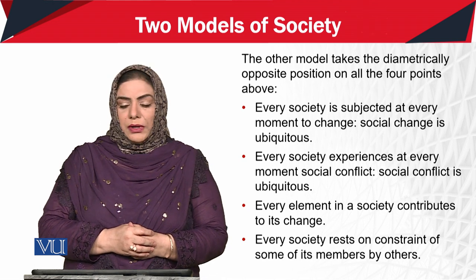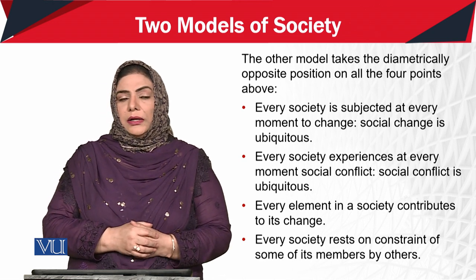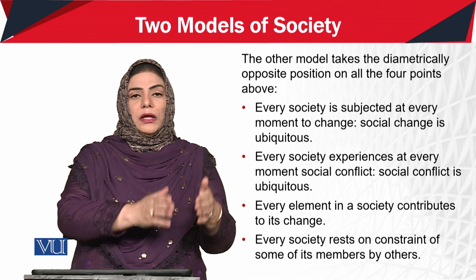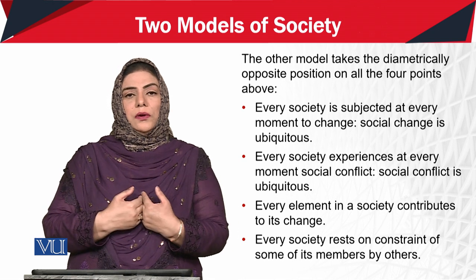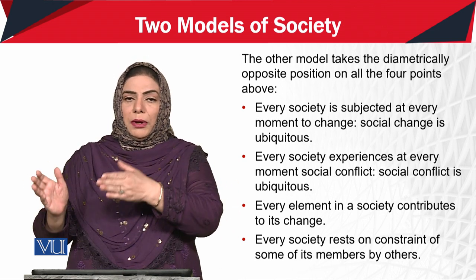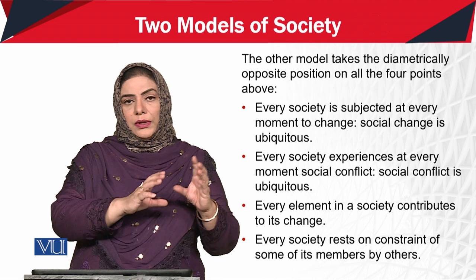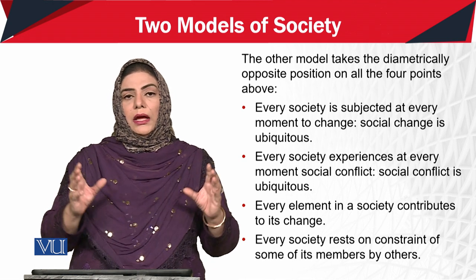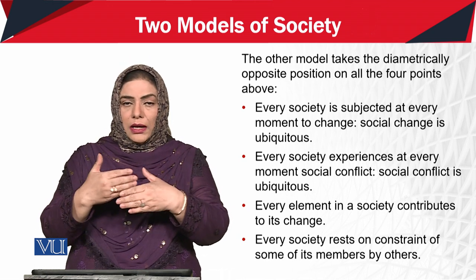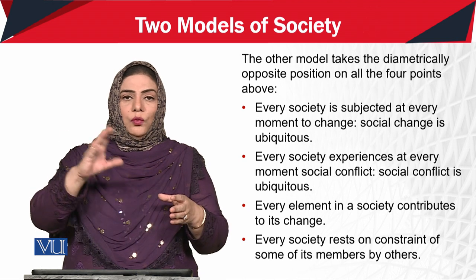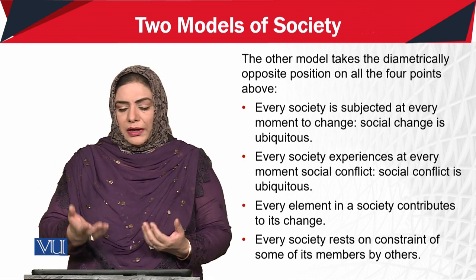Every society experiences at every moment social conflict. When people live together, they have their own interests, their own ways of doing things, their own attitudes — so social conflict will always arise. In the first model, consensus was emphasized, but in the second model the point made — which seems closer to reality — is that social conflict is very natural. When you live together and want to move toward social change, conflict inevitably rises.